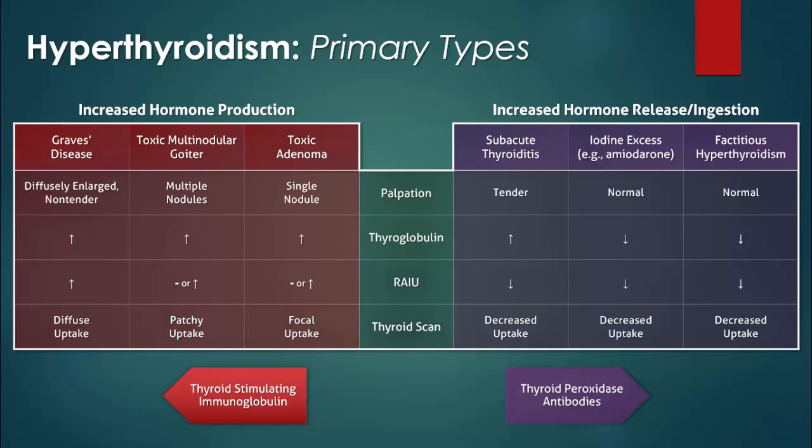Finally, we have the antithyroid antibodies. Thyroid stimulating immunoglobulins are present in Graves' disease, while thyroid peroxidase antibodies occur in Hashimoto's thyroiditis.